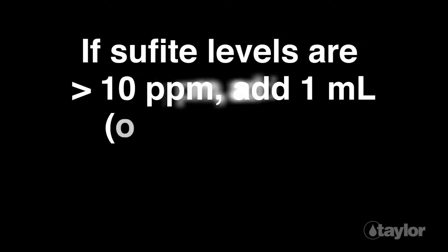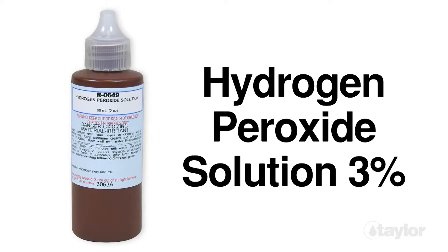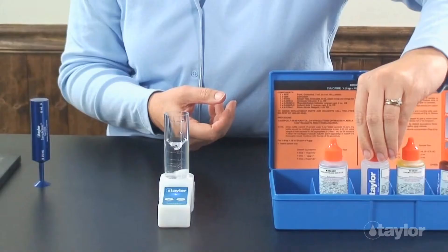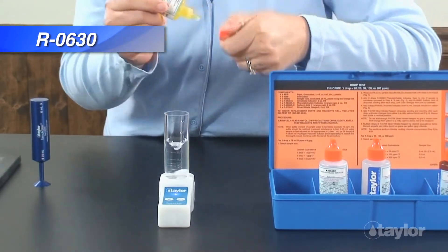Note: if sulfite levels are thought to be over 10 ppm, the sulfite must be oxidized to prevent any interference. Adding 1 ml, or 25 drops, of hydrogen peroxide solution 3% — which is sold separately — and then mixing it thoroughly will oxidize the sulfite. Add 5 drops of chromate indicator, swirling to mix. The sample will turn yellow.